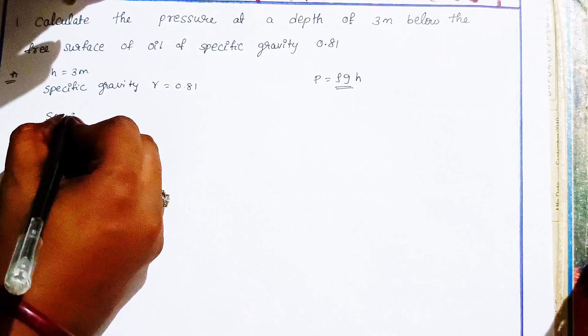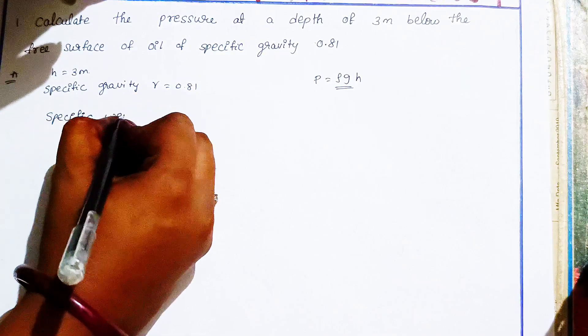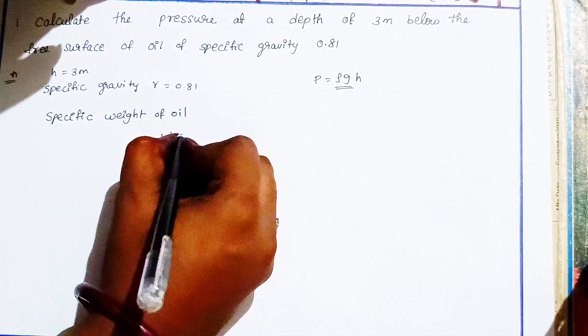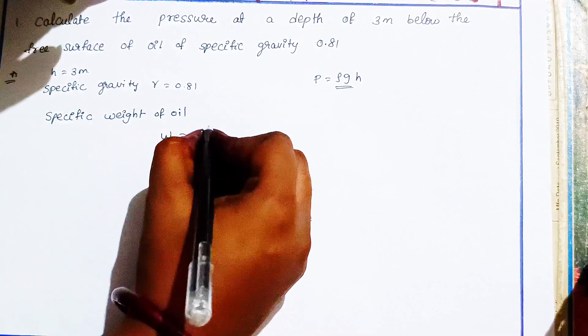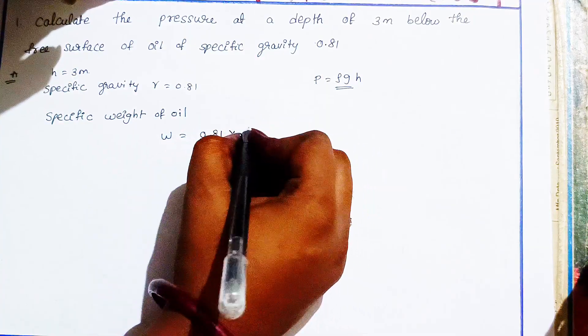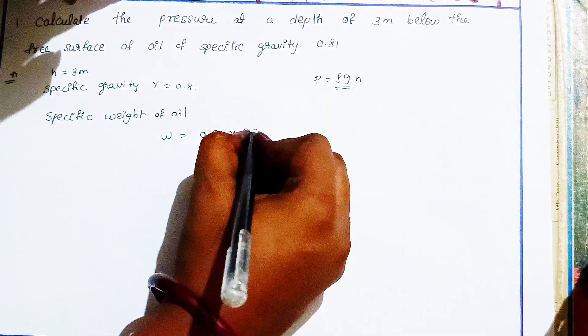Specific weight of oil, W, equals specific gravity times gamma: 0.81 times 9810.